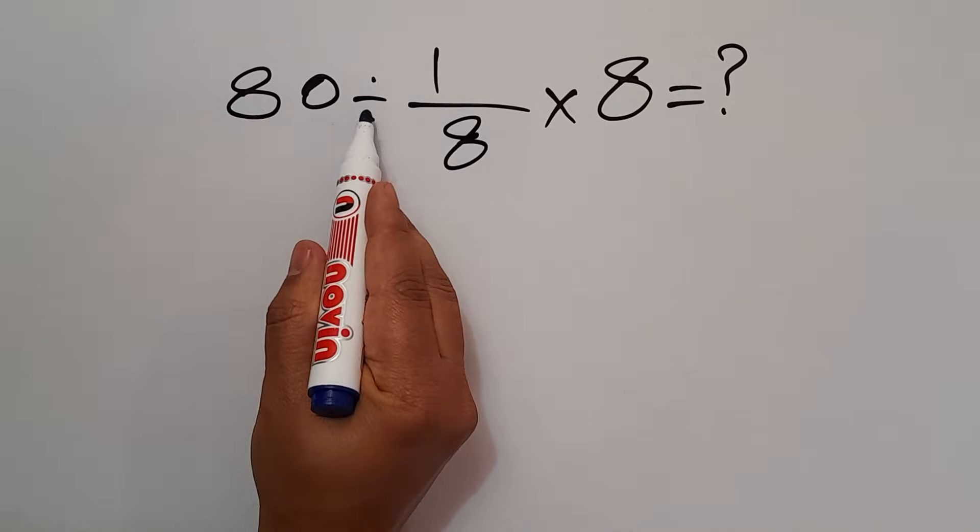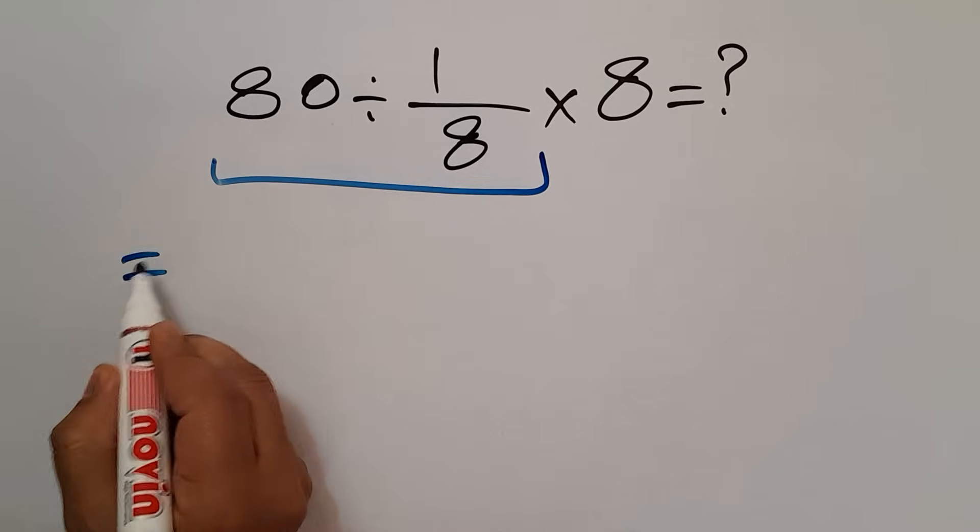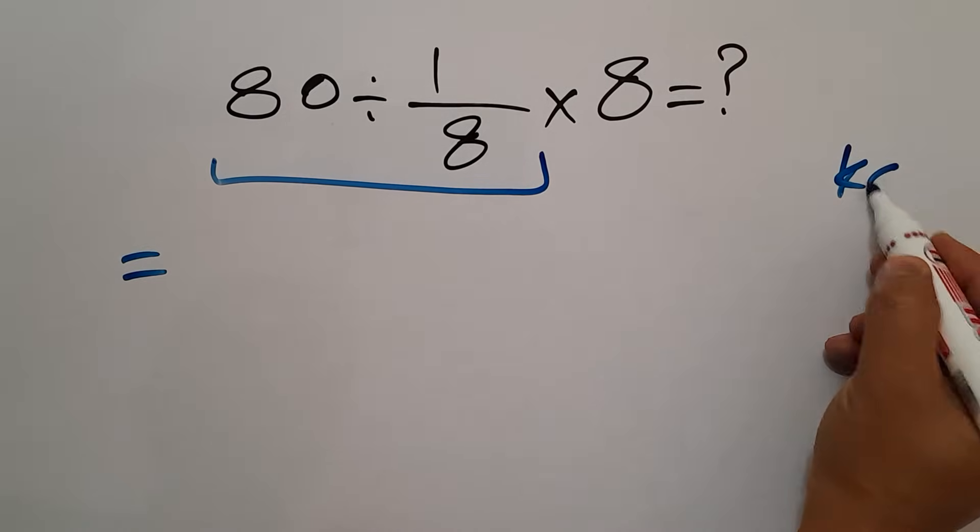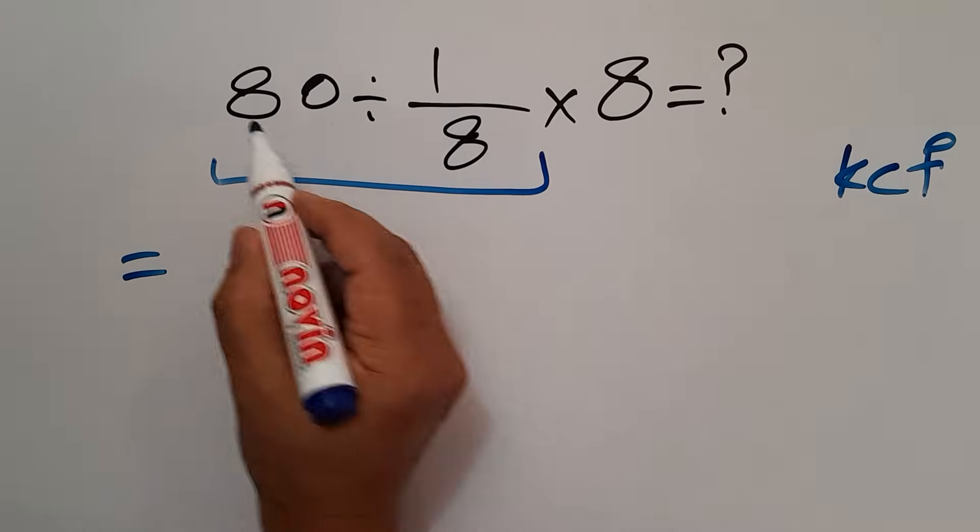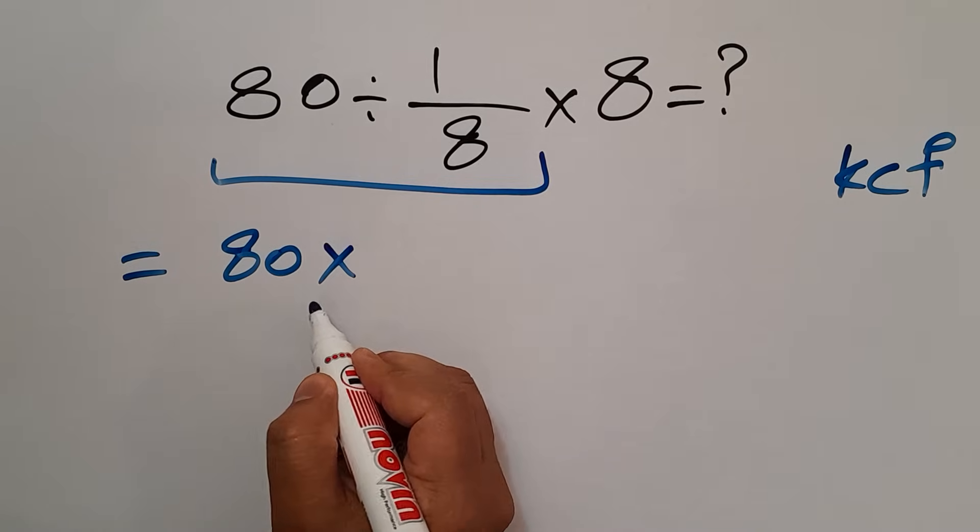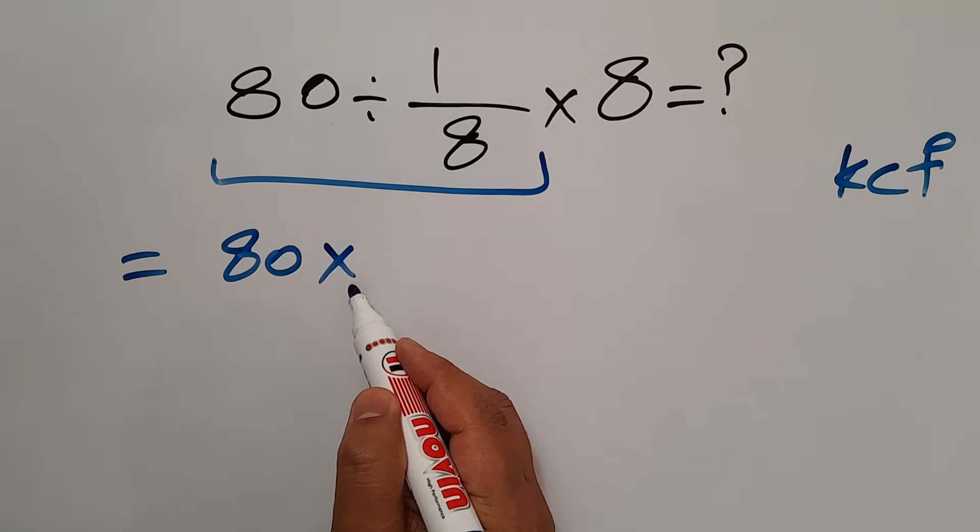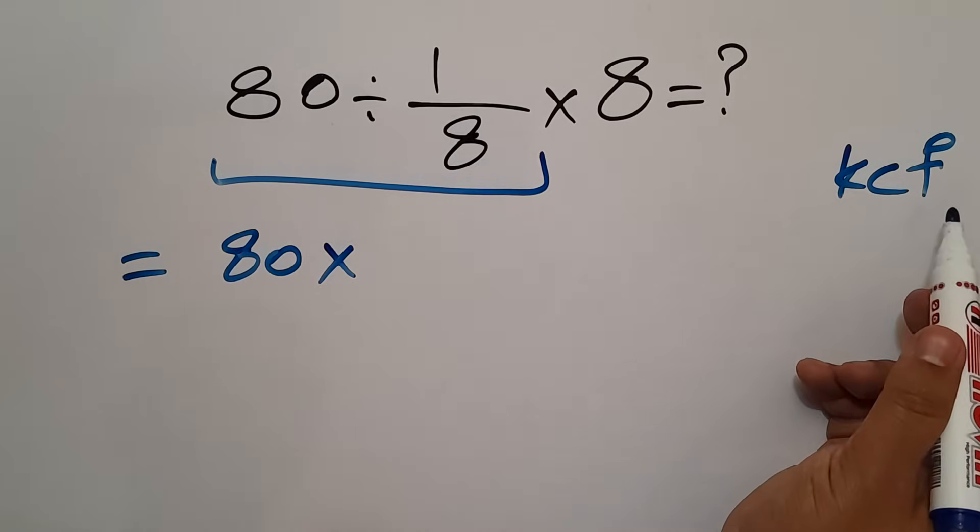80 divided by 1 over 8. According to the KCF rule, keep the first fraction 80, C means change division to multiplication, and F stands for flip.